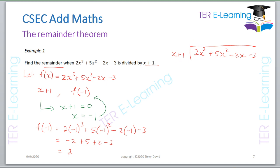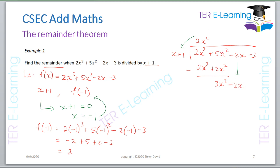The first thing we need to do is ask: what does (x + 1) go into 2x³? I need to put 2x² on top, because 2x² multiplied by (x + 1) gives 2x³ + 2x². Then we subtract: 5x² minus 2x² gives 3x², and 2x³ minus 2x³ gives 0. Then we bring down the next term, −2x, giving us 3x² − 2x.